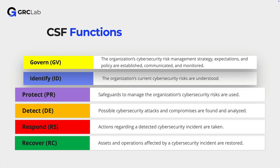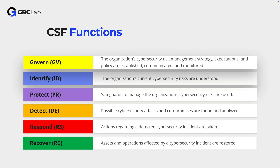Now to make everything clearer, let's start at the very top. The six functions of the CSF are Govern, Identify, Protect, Detect, Respond and Recover. Each function has a unique identifier consisting of two letters. It's very important to understand that the functions, categories and subcategories only describe desirable cybersecurity outcomes. They do not represent a set of actions or controls.